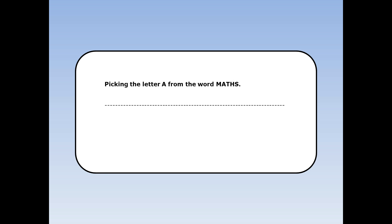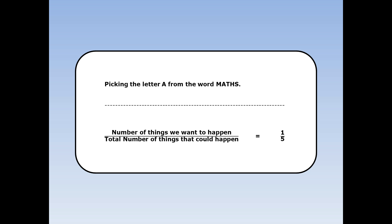I'm going to pick a letter at random from the word MATHS. What's the probability of picking the letter A? The number of things we want to happen is 1, because there's one letter A. The total number of things that could happen is 5, because there's five letters altogether. The probability is 1 over 5, or a fifth.